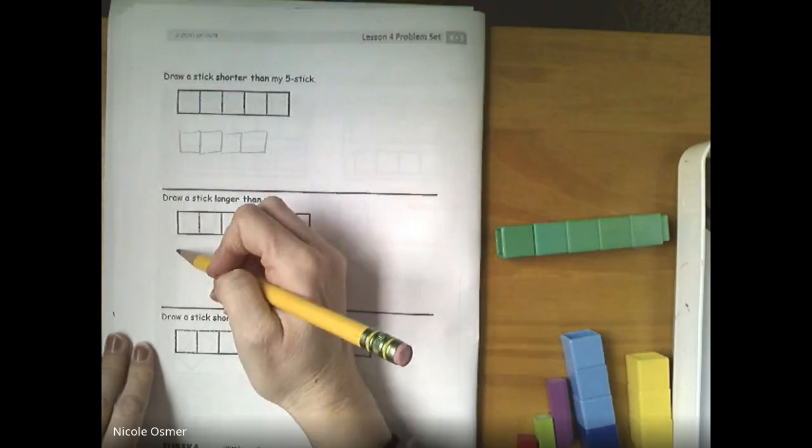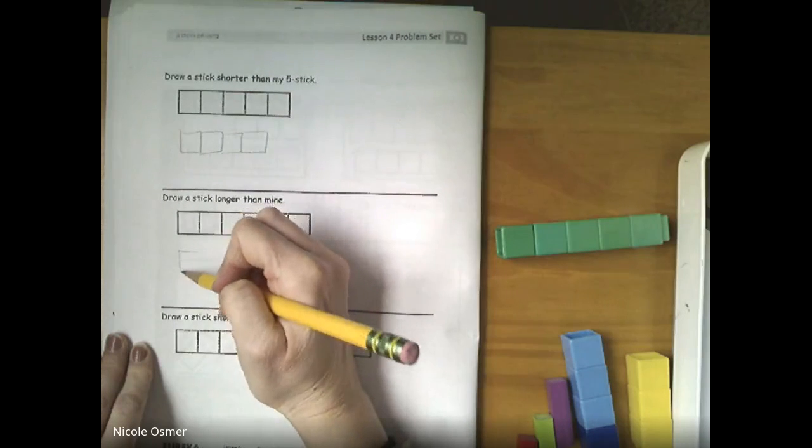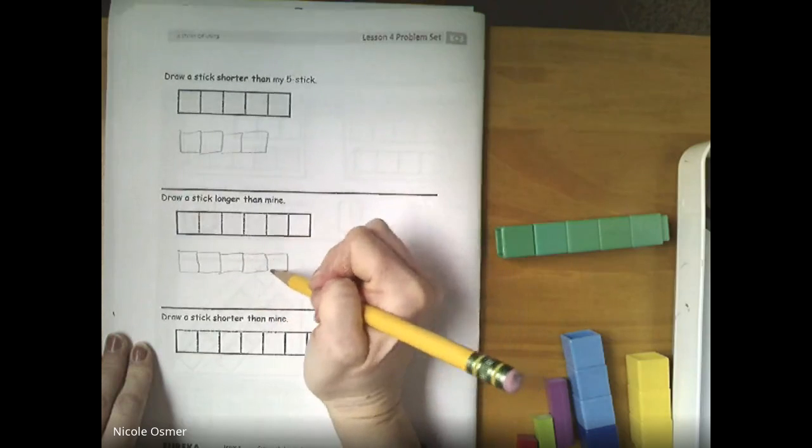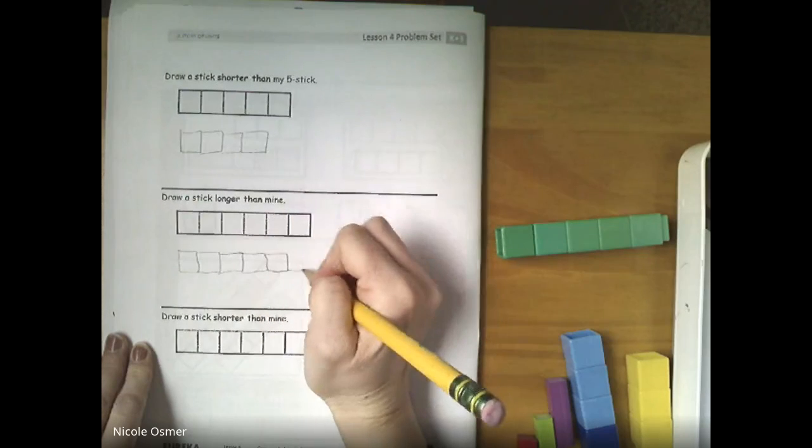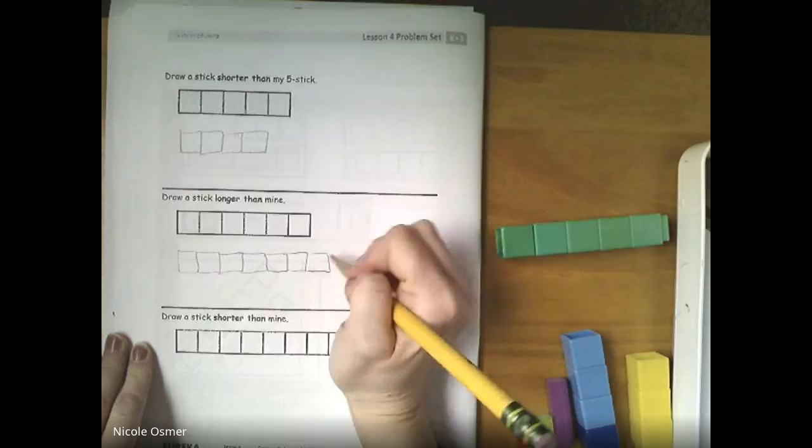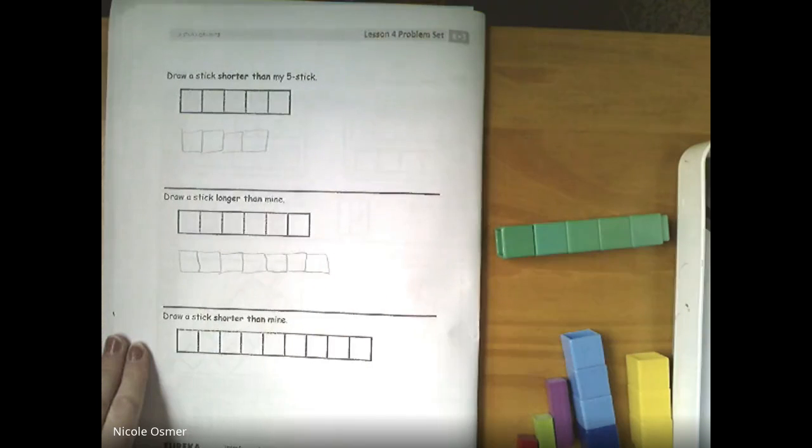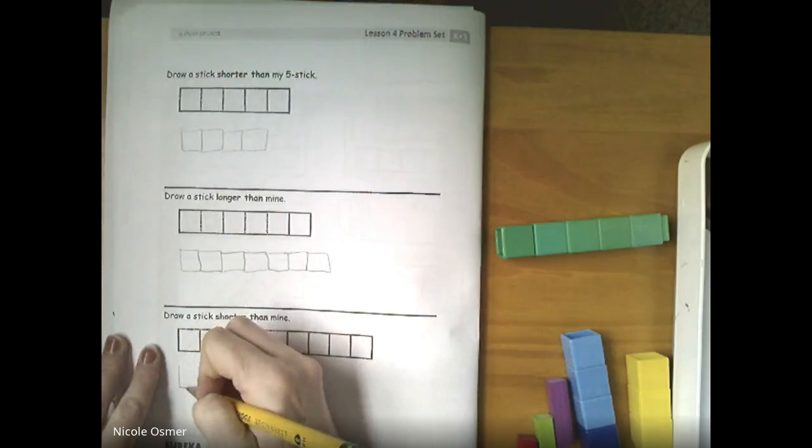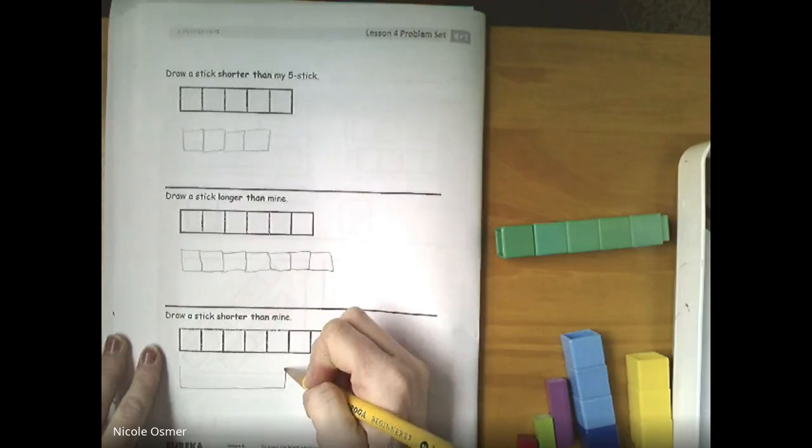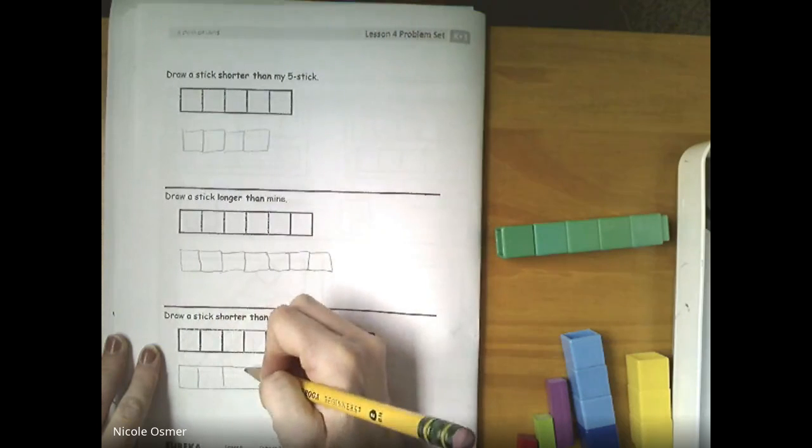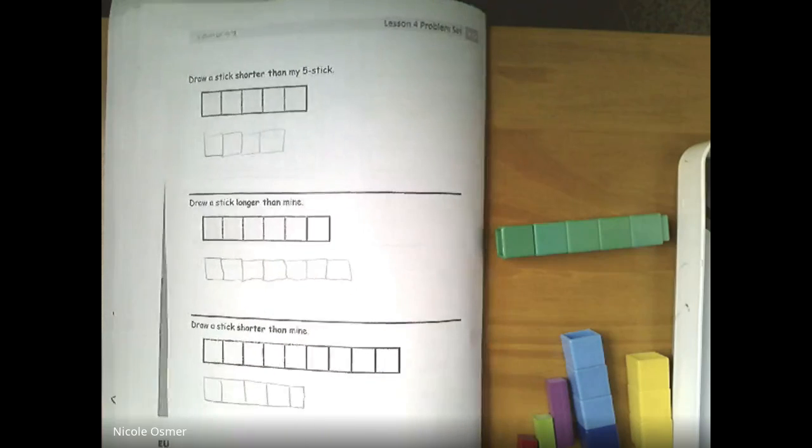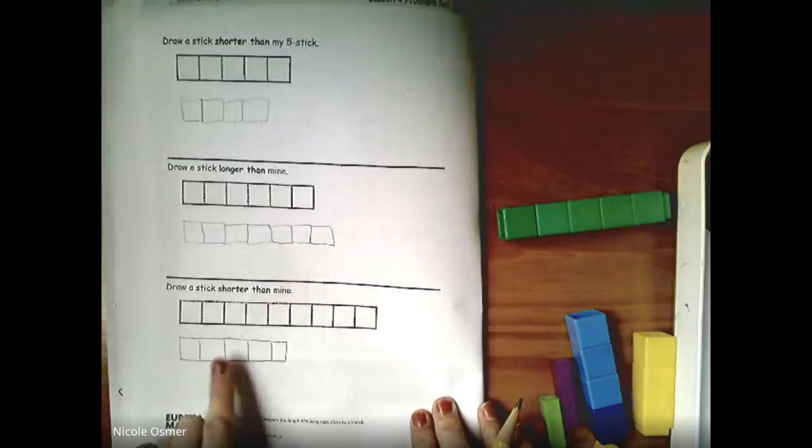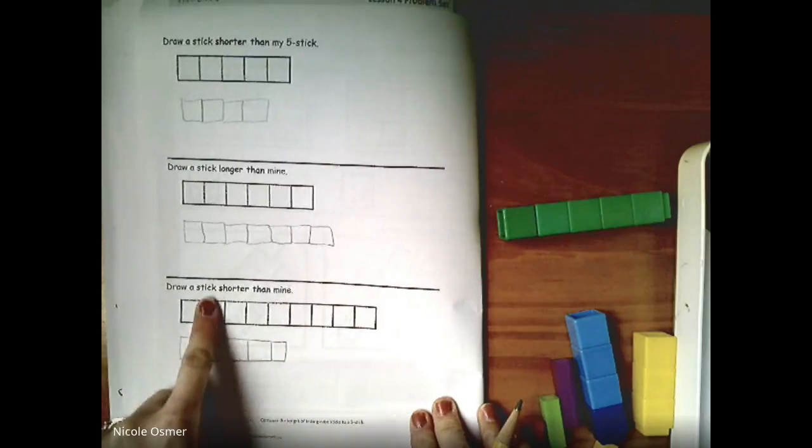Draw a stick longer than... how many? Six. So you want it to be longer. So I'm going to line them up and keep counting them. One, two, three, four, five, six, seven. Seven is longer than six. And then draw a stick shorter than this one. So I'm making sure I'm doing a couple different ways to draw the shorter sticks. And I compare them. Oh, here we go. This one. My stick is shorter than the top one.